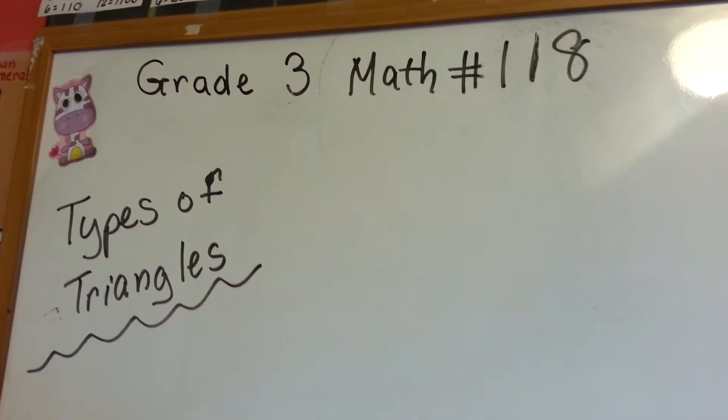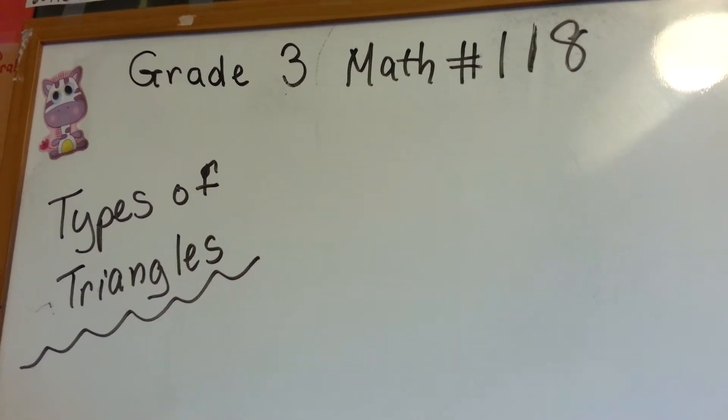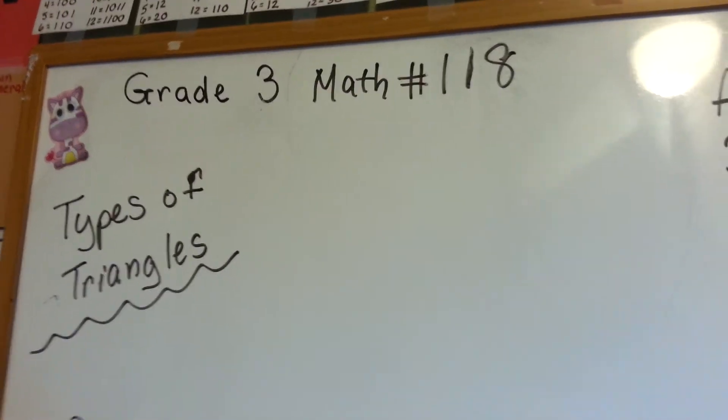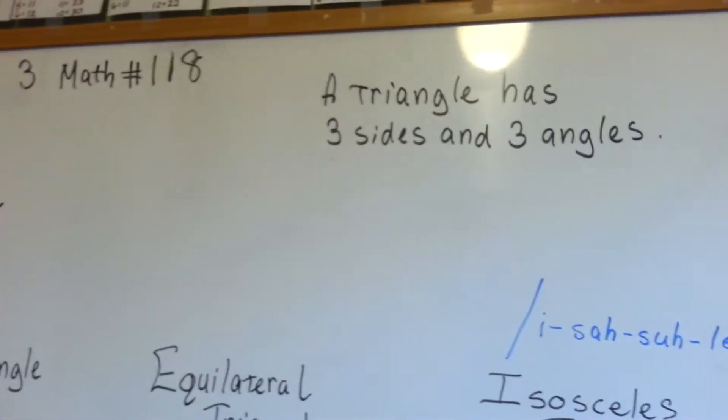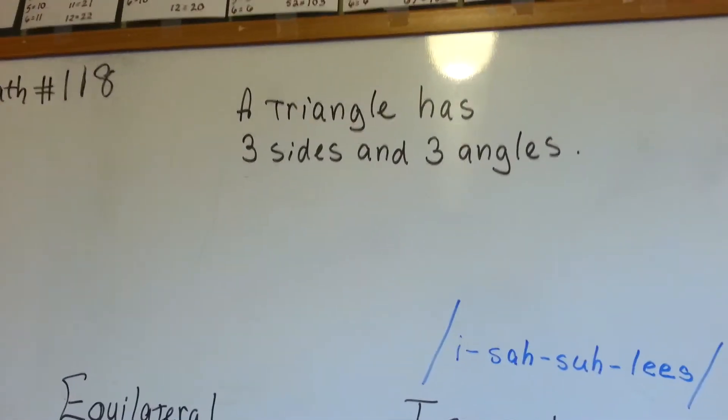Three Math, number 118, Types of Triangles. Now, there's a lot of different types of triangles, and we're going to talk about three. Remember, a triangle has three sides and three angles.